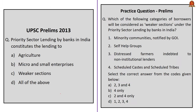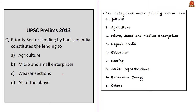This question was asked in the 2013 UPSC prelims exam: Priority sector lending by banks in India constitutes the lending to (1) agriculture, (2) micro and small enterprises, (3) weaker sections. In the context of this question, there are 8 categories as per the priority sector lending program: agriculture, micro, small and medium enterprises, export credit, education, housing, social infrastructure, renewable energy, and others. The correct answer for this question is option D — all of the above.